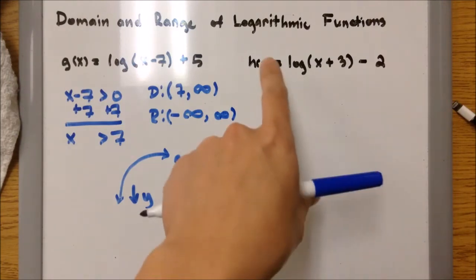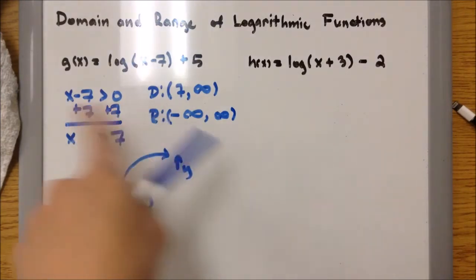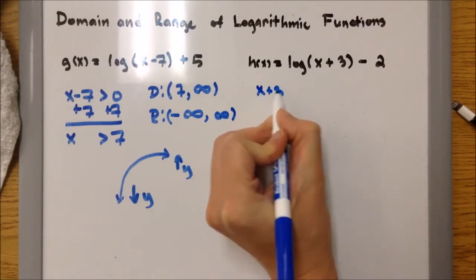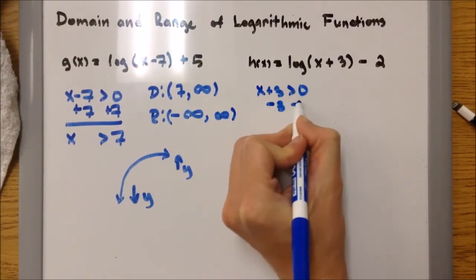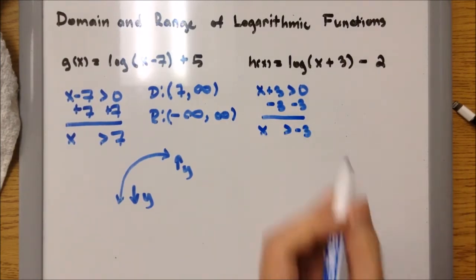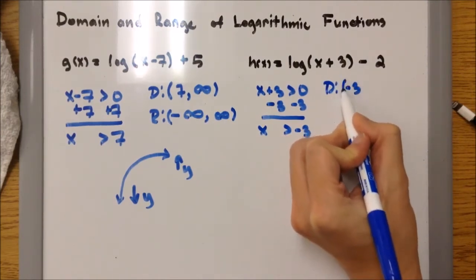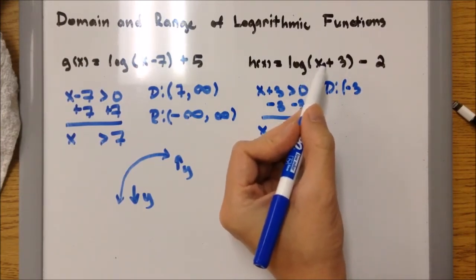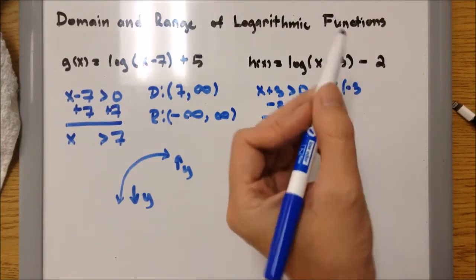In example 2, we have h of x equals log of x plus 3, minus 2. It's pretty much the same process. So x plus 3 has to be greater than 0, and solving for x gives us x greater than negative 3. So our domain starts at negative 3 with a parenthesis — because if we plug in negative 3, that gives negative 3 plus 3 equals 0, and we can't have that. That's why we use parenthesis.